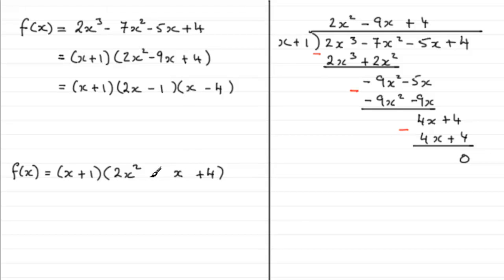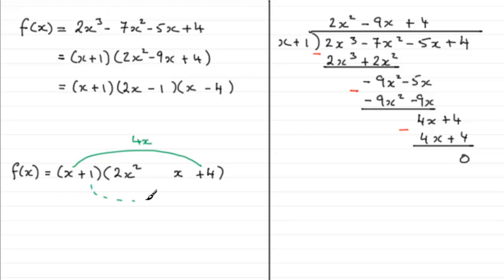Where is that minus 5 going to come from? When we multiply the x with the 4, we're going to get an x term — this is going to be 4x. Where else are we going to get an x term? When we do 1 multiplied by this value here. We've got to add 4x to it and end up with minus 5x. So really we want to have minus 9x in here — minus 9x plus that 4x will give us the minus 5x. And that's what we've got to put here: minus 9.